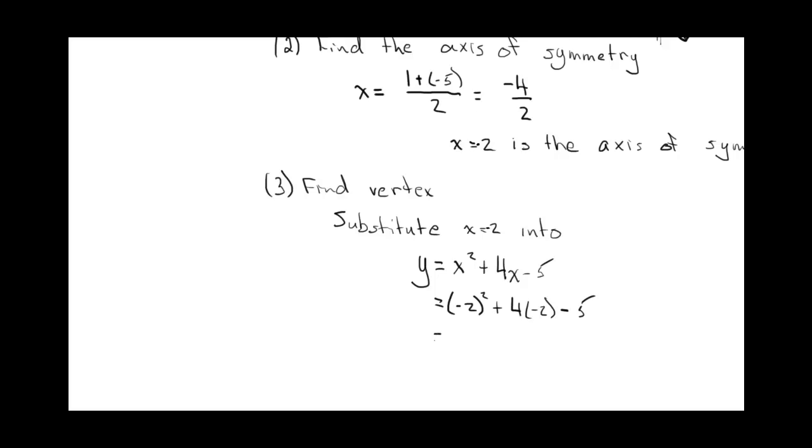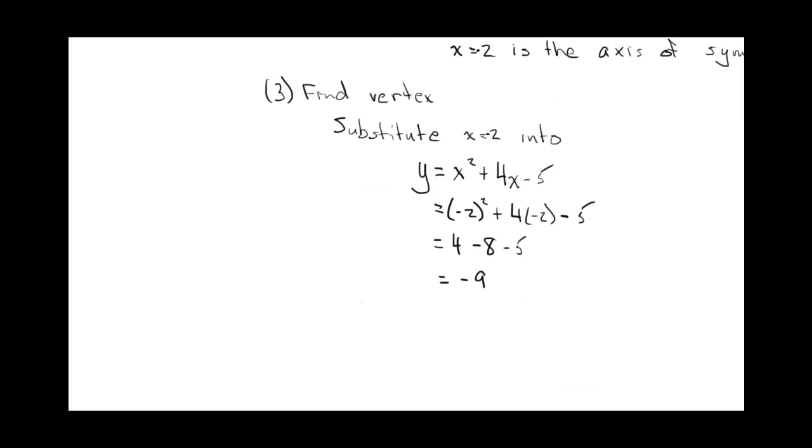And we'll just work out what that is. So negative two squared is four, minus eight, minus five. Four minus eight is negative four. So negative nine. So therefore the vertex, this is y.